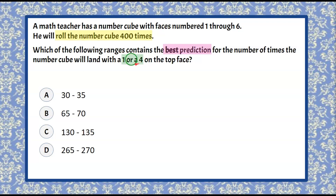The first thing we want to do is determine the probability of a 1 or a 4. A 1 or a 4 are 2 of the 6 options when you roll a number cube — so that's 6 opportunities for a solution, and 2 of those outcomes are a 1 or a 4. So the probability of rolling a 1 or a 4 is 2 out of 6, which simplifies to 1 out of 3.